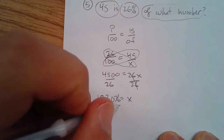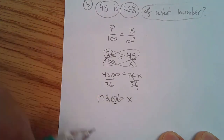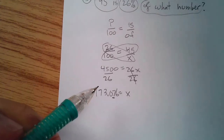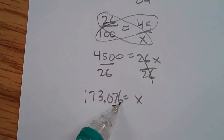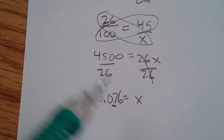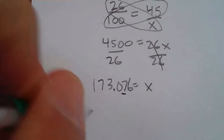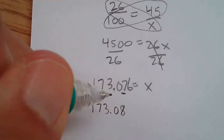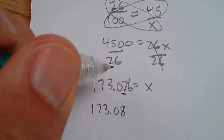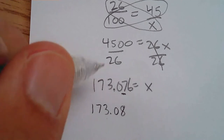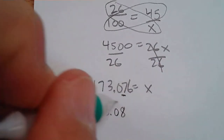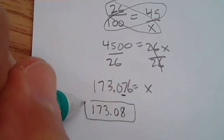Rounding to the nearest hundredth, the 6 in the thousandths place bumps the 7 up to an 8, so the answer is 173.08. That is the number.